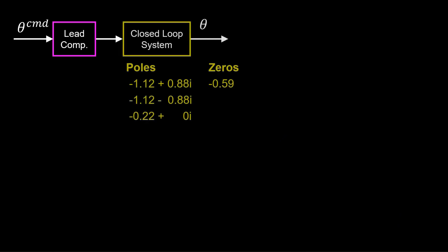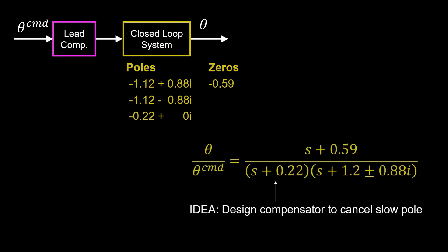Now, our closed loop had the following poles and zeros. The lead compensator idea is to cancel the slow pole of the closed loop system and replace it with a faster one.